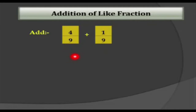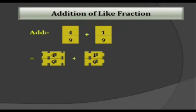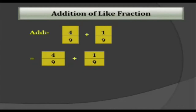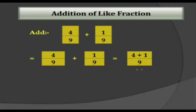In that condition, how will we add? We will add only the numerators and write the denominator as it is. Here the numerators are 4 and 1, so we add 4 and 1 and write 9 as it is. So 4 plus 1 upon 9 — the answer is 5 by 9.